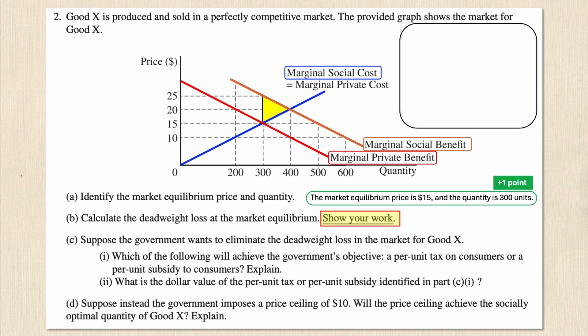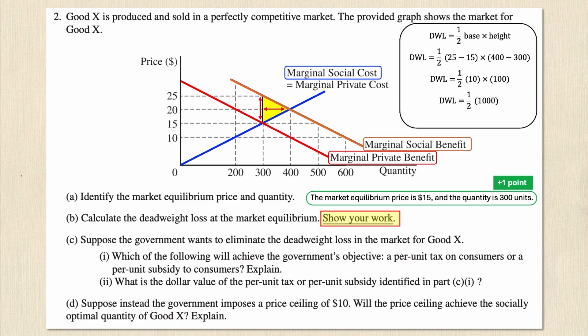Now I solve for the deadweight loss triangle. The area of a triangle is one half times base times height. Deadweight loss equals one half times (25 minus 15) times (400 minus 300), which simplifies to one half times 10 times 100. That gives one half of 1000, and finally deadweight loss equals $500. Since I've shown my work, I get the point for solving deadweight loss.